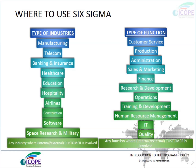Where to use Six Sigma? The types of industries. It can be used in manufacturing, telecom, banking and insurance, healthcare, education, hospitality, airlines, communication, software, space research, and military.